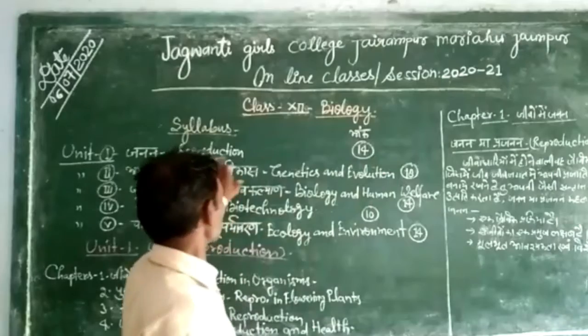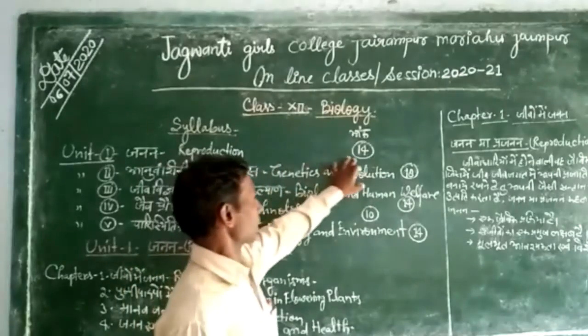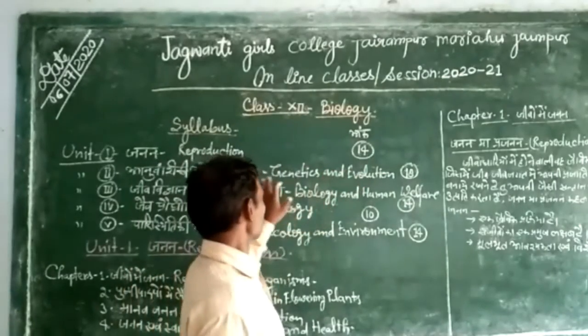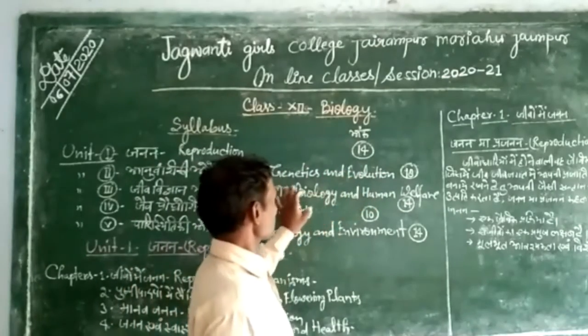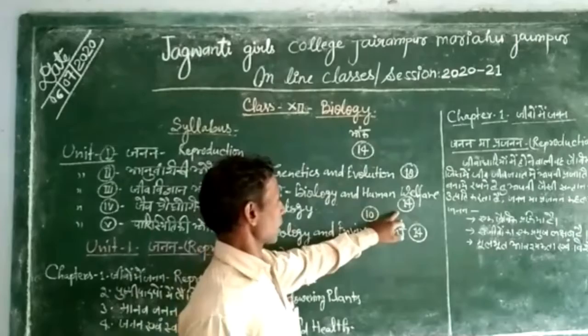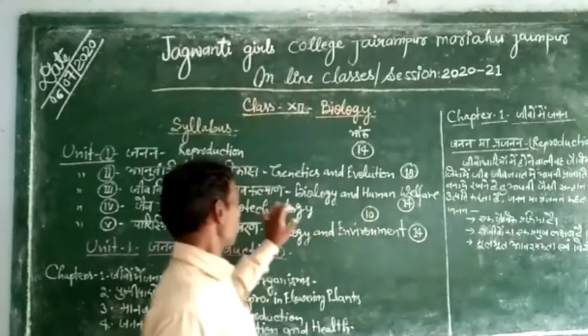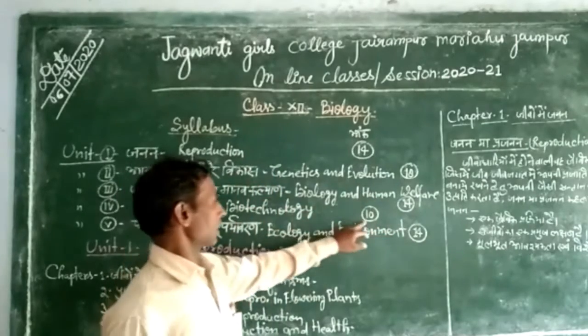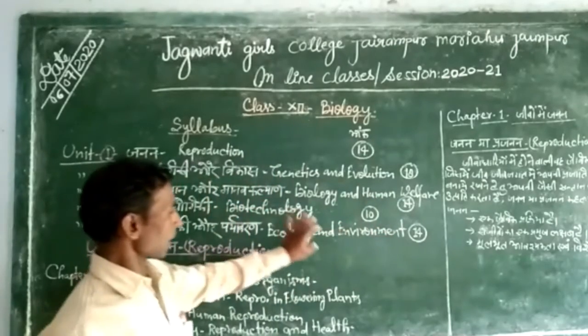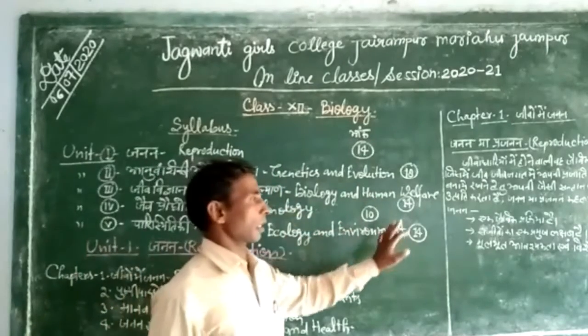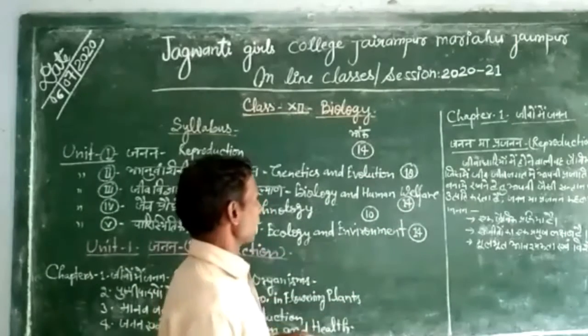The marks for each unit are: the first unit is 14, the second is 18, the third is 14, the fourth is 10, and the last is 5.